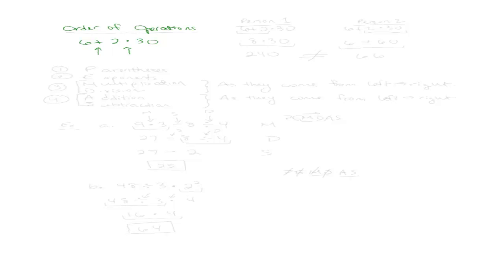Let's say, just for the sake of it — and I'm not saying this is correct — one person decided to take care of 6 plus 2 times 30 by adding 6 and 2 first. That would give them 8, and then multiplying 8 times 30 would give 240. Then another person, person 2, decides to look at the exact same problem but instead of adding 6 and 2 first, they multiply 2 times 30 first, getting 60, and then add 6 plus 60 to get 66. Notice how their answers are not the same — I'm using the not-equal sign to show that both answers are different.